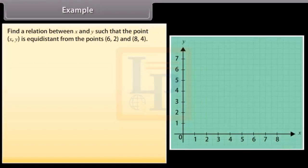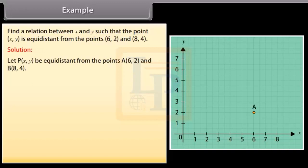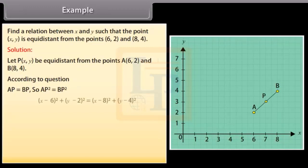Find a relation between X and Y such that the point (X,Y) is equidistant from the points (6,2) and (8,4). Solution. Let P(X,Y) be equidistant from the points A(6,2) and B(8,4). According to question, AP is equal to BP, so AP square is equal to BP square.